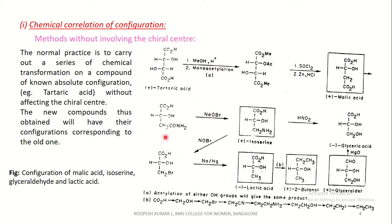This malic acid can be converted to an amide. This on reacting with sodium hypobromide gives isoserine. So now we know the configuration of isoserine from the older known compound. The new compounds obtained will have their configurations corresponding to the old one. This isoserine on reaction with nitrosyl bromide gives the corresponding bromide, which on reduction with sodium in mercury gives lactic acid.